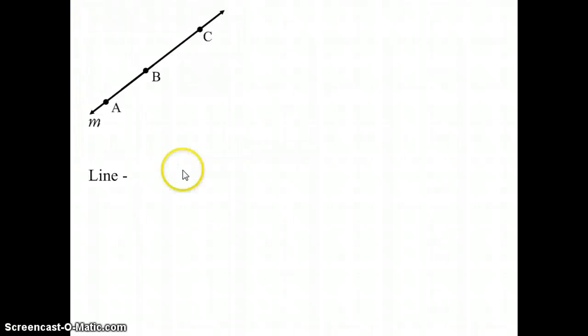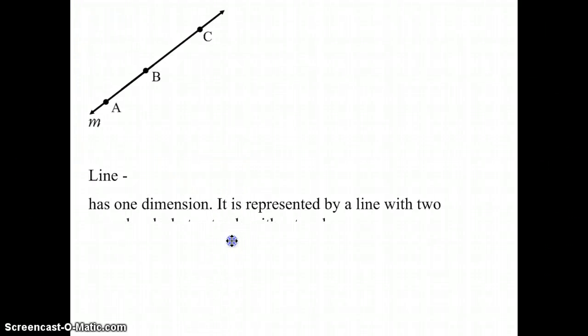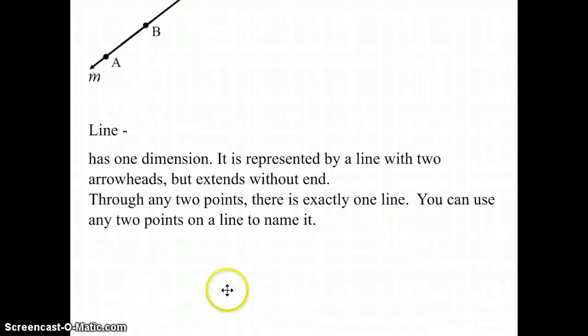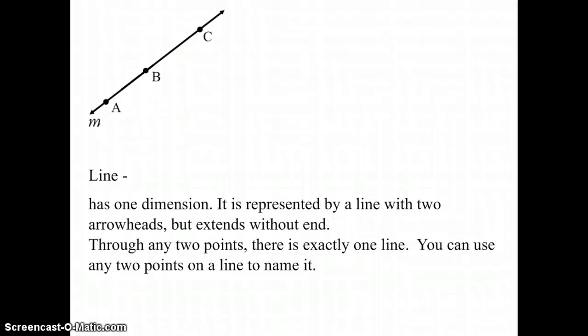Next, we have a line, and a line has one dimension. It is represented by a line with two arrowheads, but extends without ends. Through any two points, there is exactly one line. You can use any two points to name it.